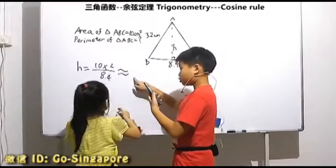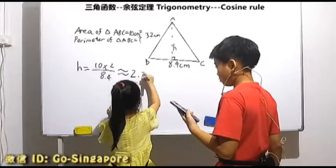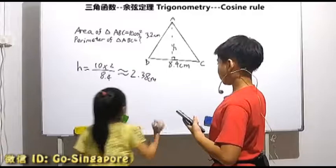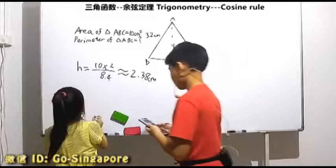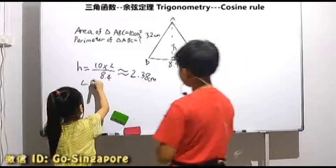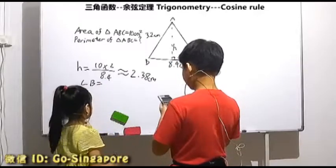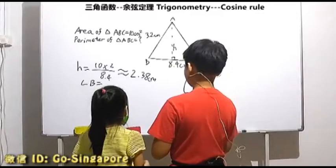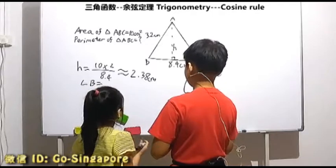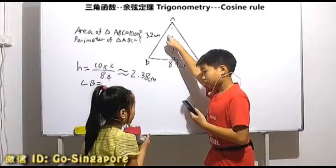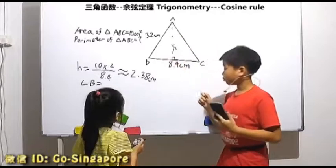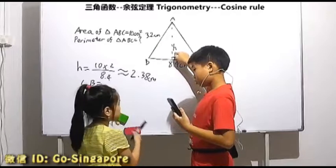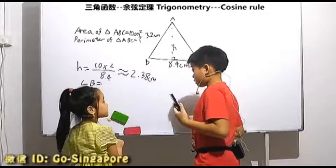This is 2.38 centimeters. This triangle is a triangle. Define this angle. Why is this side? You know these 2 sides, right? This side is the opposite side, hypotenuse. Yes, correct.